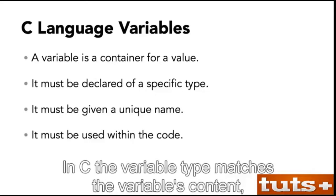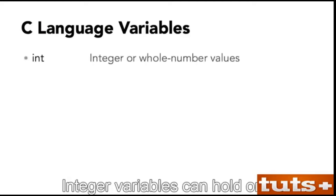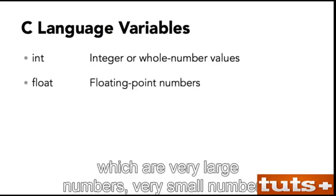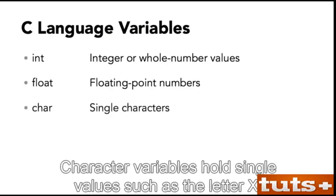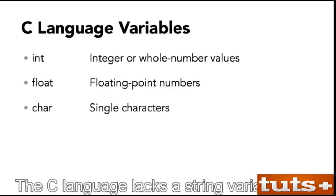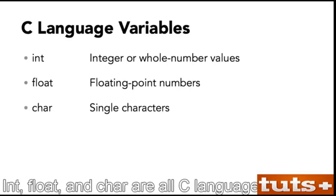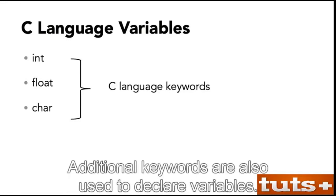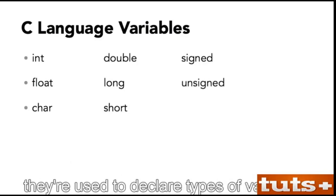A variable is a container for a value. Because C deals with different types of values, a variable must be declared as a specific type and given a name. In C, the variable type matches the variable's content — the type of value being stored. Integer variables can hold only integer values, or whole numbers. Float variables hold floating point values — very large numbers, very small numbers, or numbers with a fractional part, like 2.1. Character variables hold single values, such as the letter X. The C language lacks a string variable type; instead, a character array is used. Int, float, and char are all C language keywords.